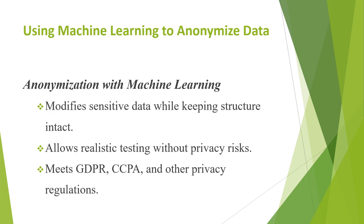Anonymizing data is essential for applications that handle personally identifiable information, like names, addresses, or payment details. Machine learning can anonymize data by modifying or masking sensitive attributes while keeping the data structurally intact. For instance, in a financial services application, machine learning can anonymize transaction details, allowing QA teams to perform realistic testing without exposing real user data.